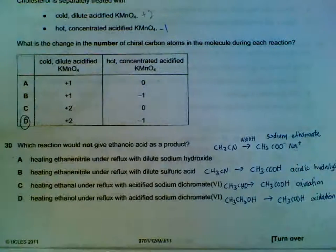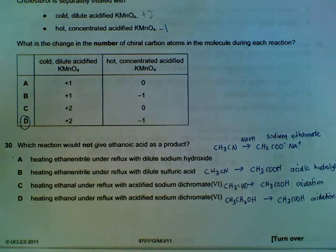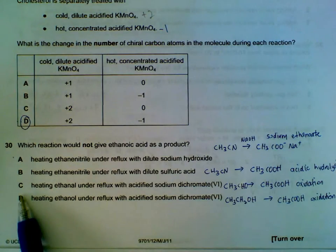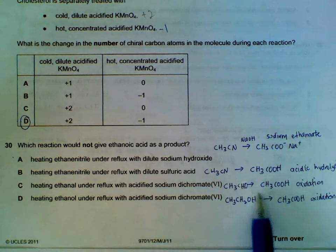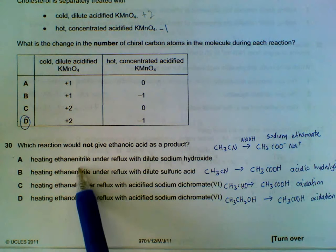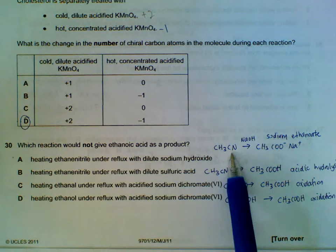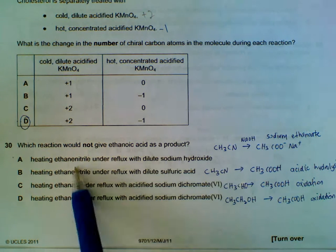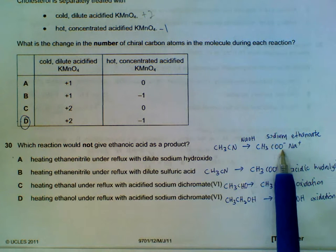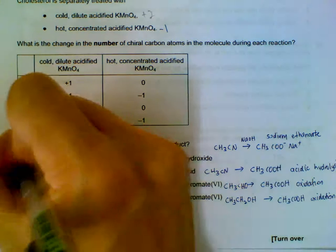Number 30, which one would not give ethanoic acid as a product? B, C and D will be producing ethanoic acid under hydrolysis, oxidation or oxidation for D also. A, what we get if we reflux your nitrile with sodium hydroxide, we will get a salt, sodium ethanoate. So, it will not give us ethanoic acid.